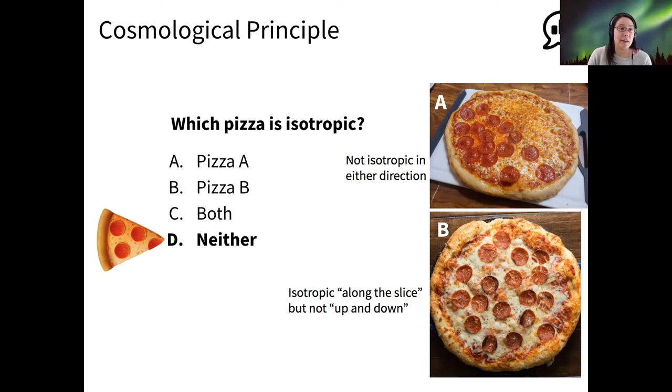So here I would say neither pizza is really isotropic. Pizza A is not isotropic in either direction, and pizza B is isotropic along the slice, but not up and down.